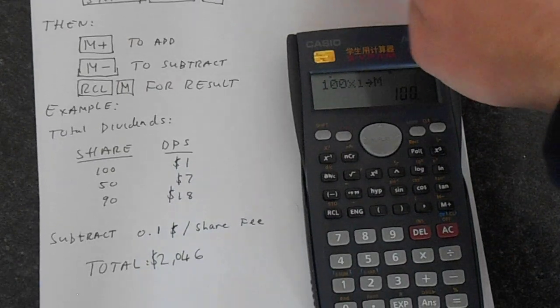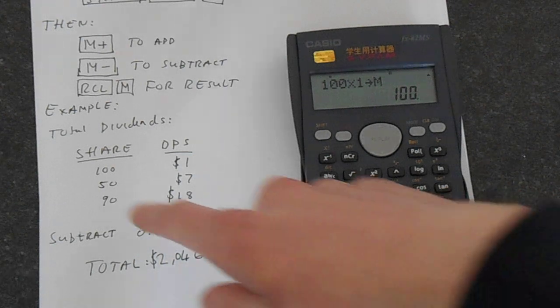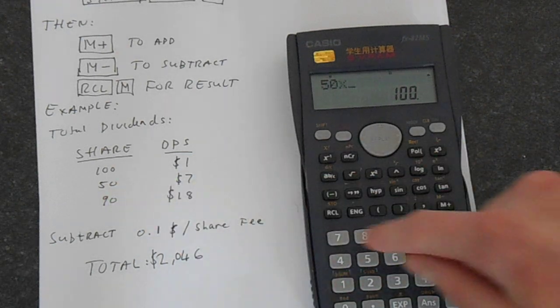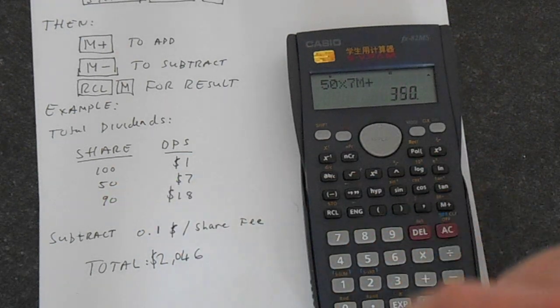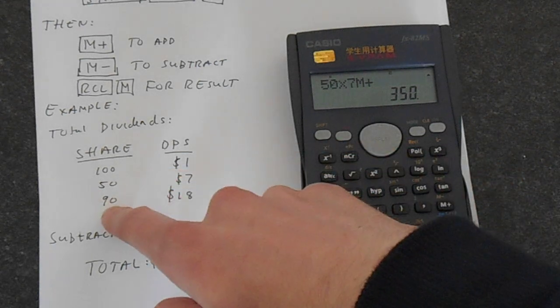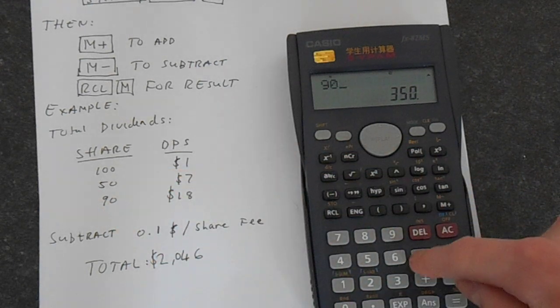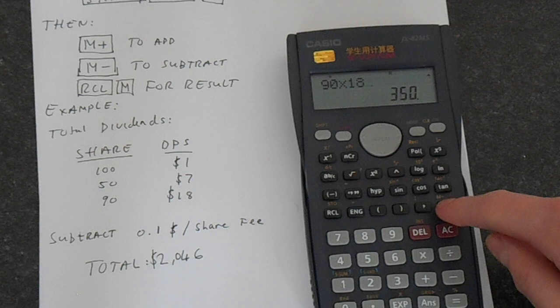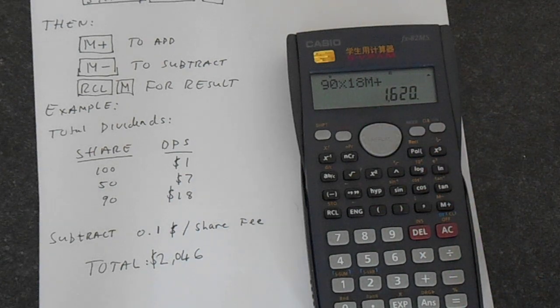Then we want to add these two, so we do 50 times 7, then M+. Then we do 90 times 18, M+. We've added those two results.